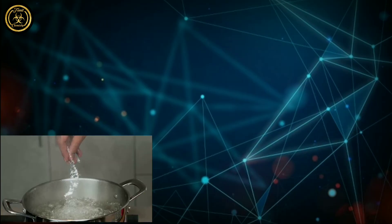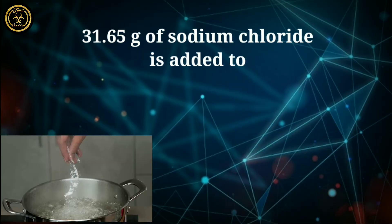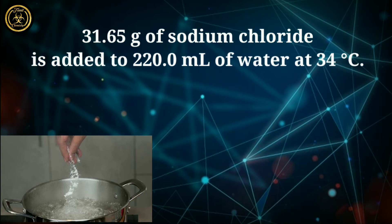We will put the water in the container. We will add 38.5 grams of sodium chloride. It will be in 60 mL of water. Now we will add the temperature.